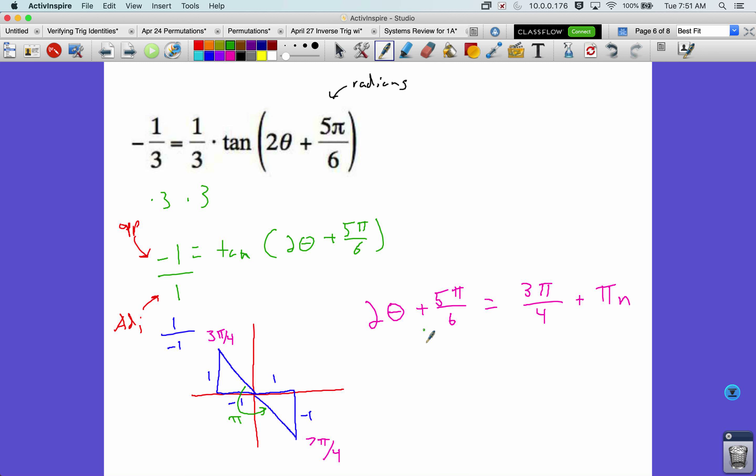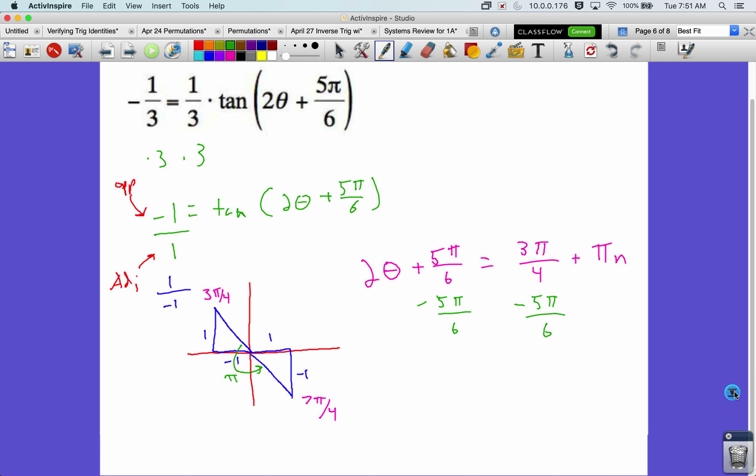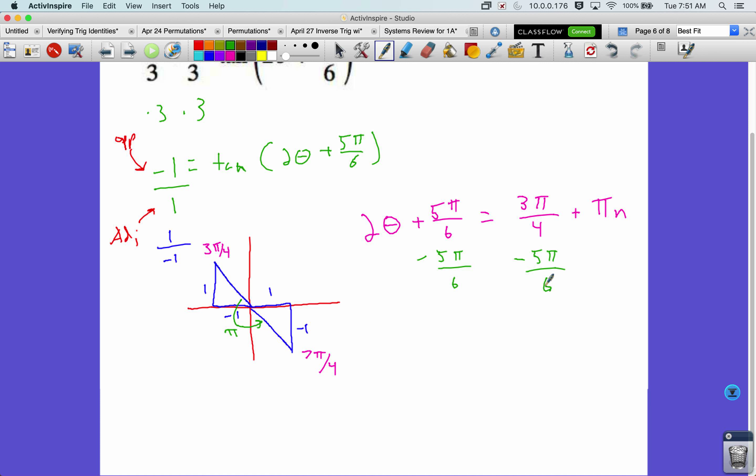Okay, so, let's subtract 5 pi over 6 from both sides. I'm going to use my calculator to do a little shortcut here. So, 3 fourths minus 5 sixths. I'm going to hit math, enter, enter, turn that back to a fraction. That's negative 1 twelfth.